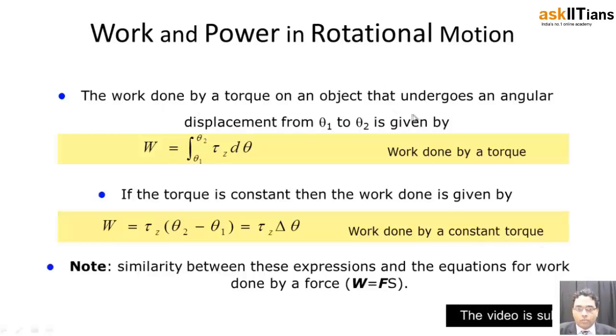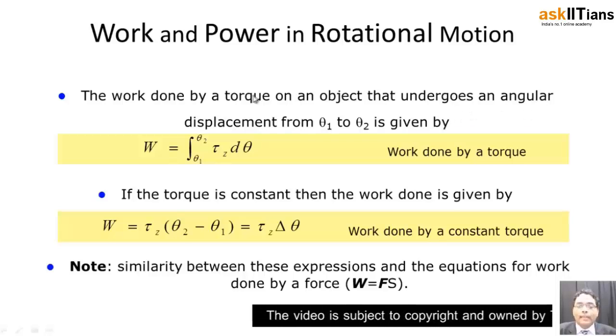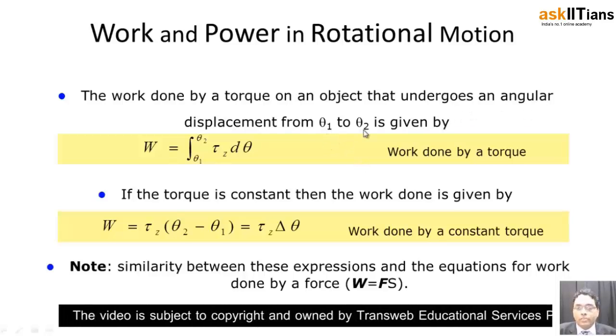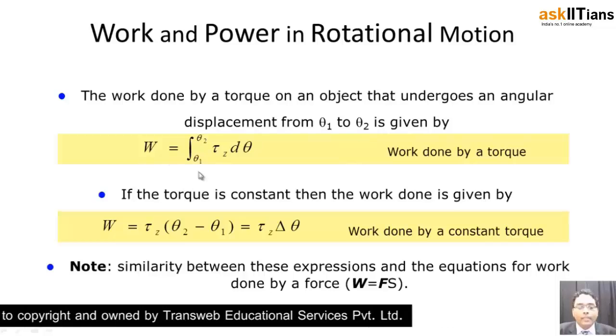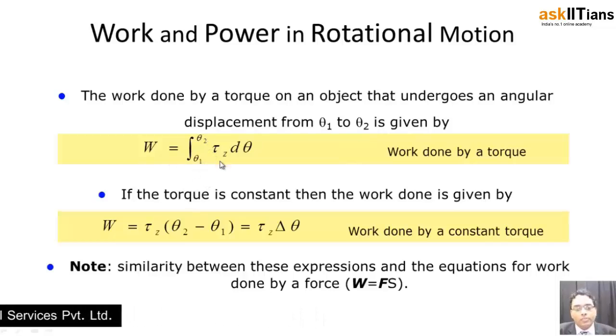When we talk about work, the work done by torque on an object which undergoes an angular displacement from θ₁ to θ₂, that is going to be given by integrating from θ₁ to θ₂, and this is nothing but the torque acting along the z direction into dθ. So τ·dθ gives you the amount of work. When you displace any particular thing from an angle θ₁ to another angle θ₂, then that produces a net amount of work. So the net amount of work on integrating gives you